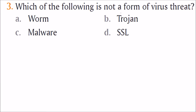Which of the following is not a form of virus threat? The answer is SSL — Secure Socket Layer — while worm, trojan, and malware are all types of threats.